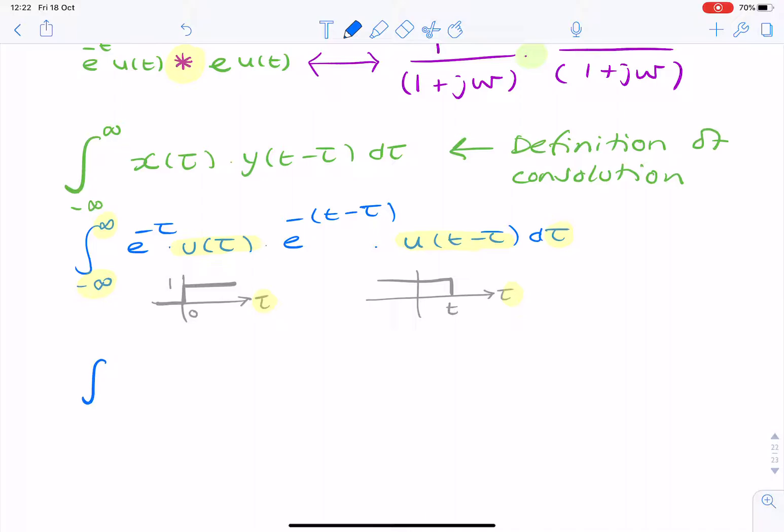So, our integration now becomes from 0 to t. And then, you're simply multiplying 1 by 1. So, that's 1 and that's 1. So, you end up with e to the minus tau multiplied by e to the minus t minus tau d tau.